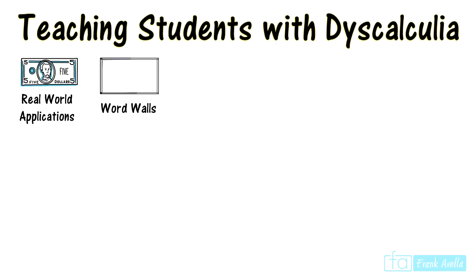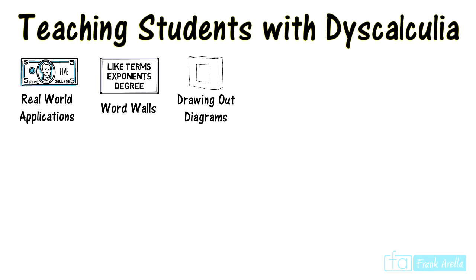Students may get confused with words like terms, coefficients, degree, exponents, and so forth. When teaching word problems involving area and perimeter, be sure to draw out the diagrams for the students. This will help them better visualize and understand the problem.